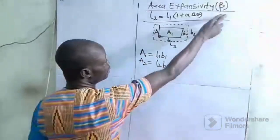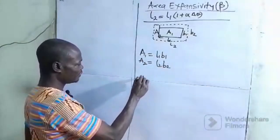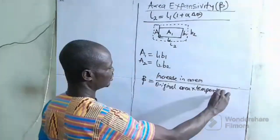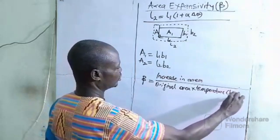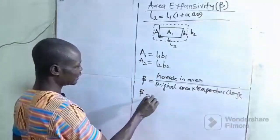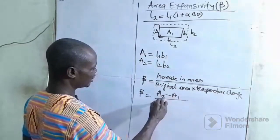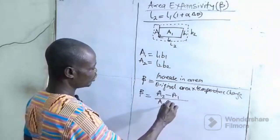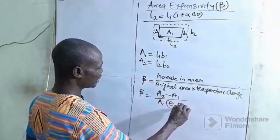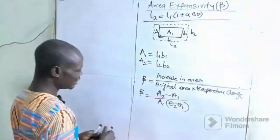In expressing the area expansivity, we are going to use beta (β) to represent it. So the area expansivity beta is the increase in area, which gives us: beta equals A2 minus A1, all over A1, multiplied by the temperature change theta2 minus theta1.